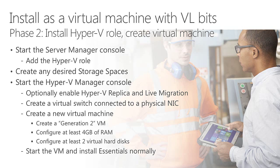Once Hyper-V is installed and your virtual machine is created, simply start it and install Essentials as you would on physical hardware — it will go through the OS installation phase, restart, and then begin the Essentials Configuration Wizard. This process is a bit cumbersome with VL or retail bits. If you're going to do it a lot, visit the TechNet page and customize an image. If you're only doing it once or twice, it's pretty straightforward — it's done entirely through the UI with just your mouse and keyboard, and no special skills are needed.